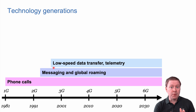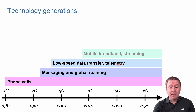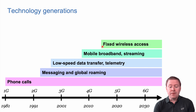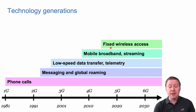In the beginning, low-speed data transfer was the only thing you could do with a mobile phone in terms of data, but it's also been used for telemetry — for example, your car can send a message if there is an accident. Mobile broadband started in the late 3G era and has become very important; nowadays we stream a lot of things like video. Fixed wireless access became an alternative to fiber connections because it was fast enough and cheaper in certain regions, starting already in the 4G era.